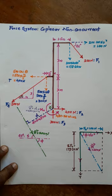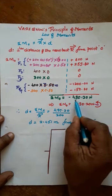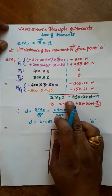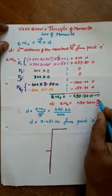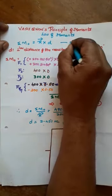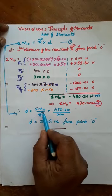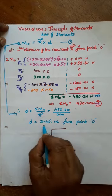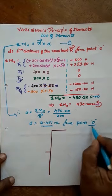After computation, the algebraic sum of moments of all forces about point O equals −490 N·m. The negative sign indicates an anticlockwise moment. Applying the formula, the perpendicular distance d = algebraic sum of moments / R = 490 / 200 = 2.451 m from O.